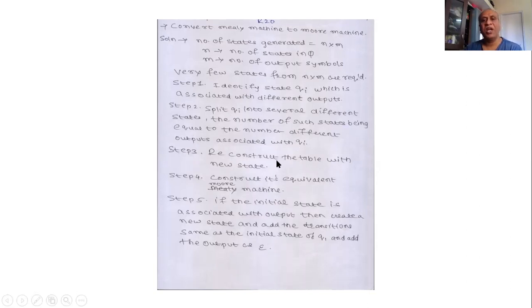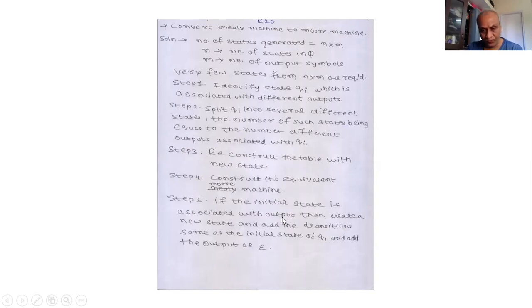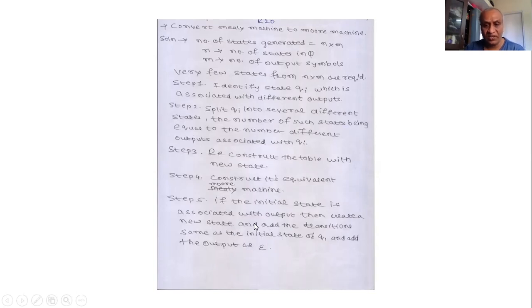Step number three is we have to reconstruct the transition table, including all the new states which we had just created. Then from the transition table, we are going to reconstruct the equivalent Moore machine for the Mealy machine — this is step number four. Step number five says that if the initial state is associated with output, then create a new state, add the transitions same as the initial state QI, and add the output as Epsilon.